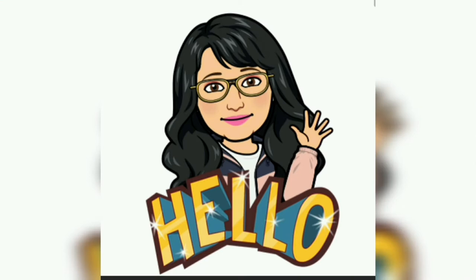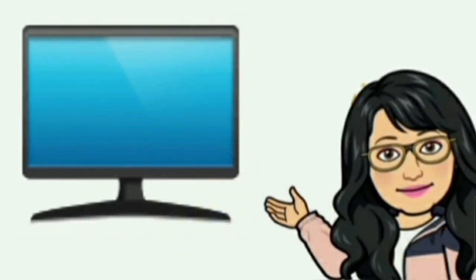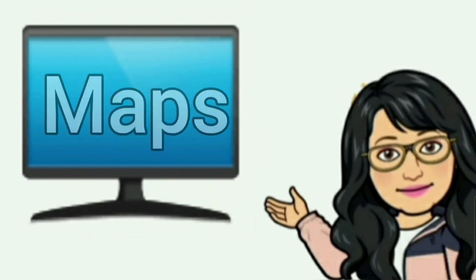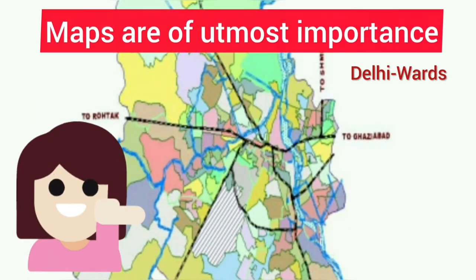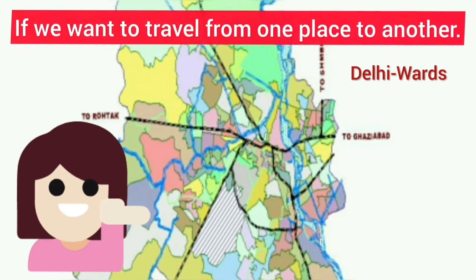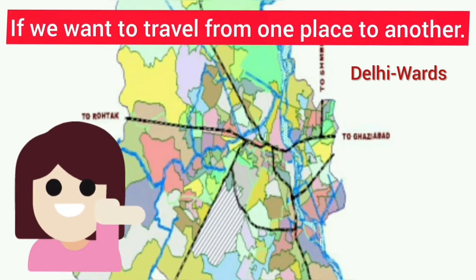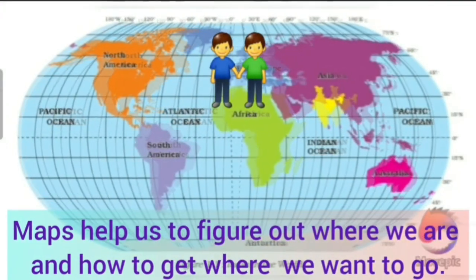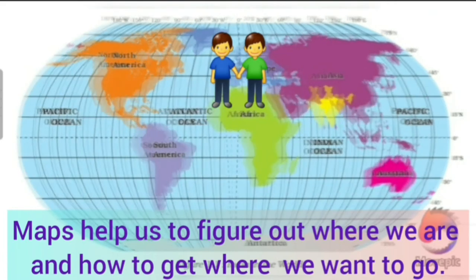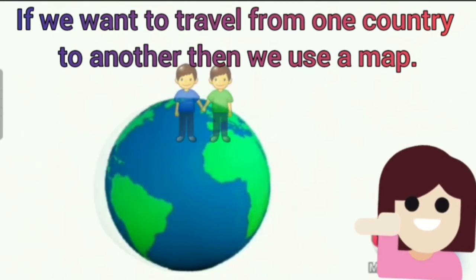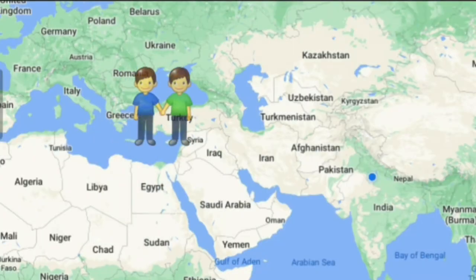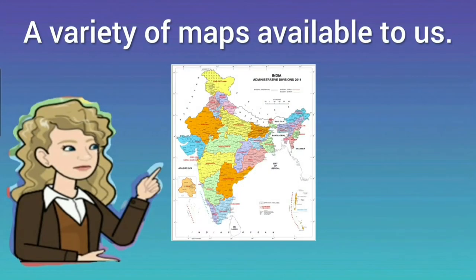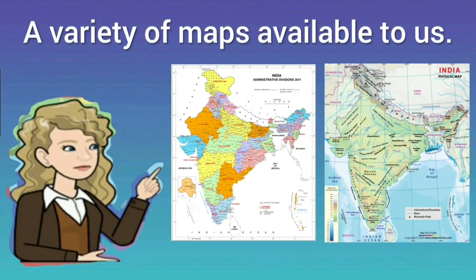Hello everyone. In this video you will learn about maps and their different types. Maps are of utmost importance if we want to travel from one place to another. They help us to figure out where we are and how to get where we want to go. For example, if we want to travel from one country to another, or from one place to another inside a country, then we use a map.